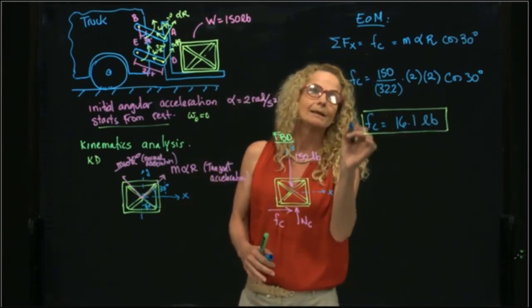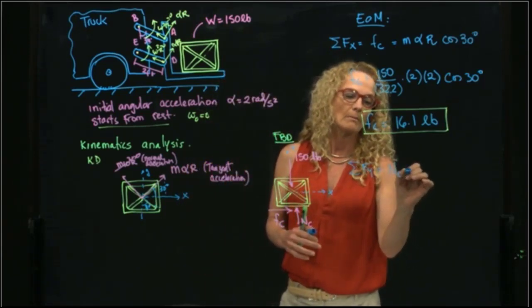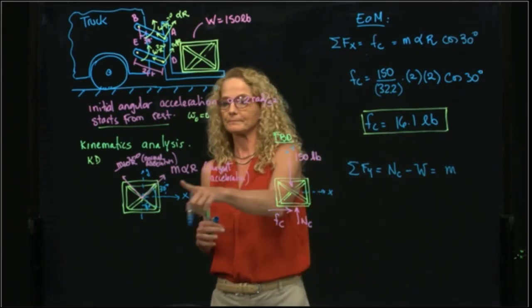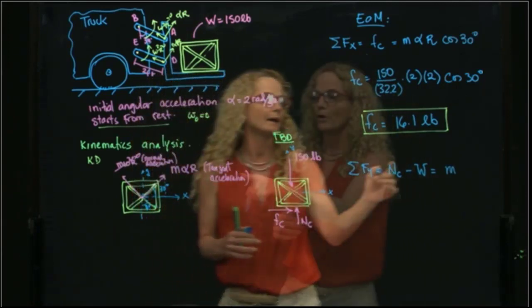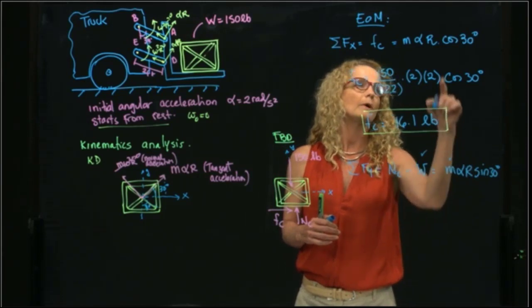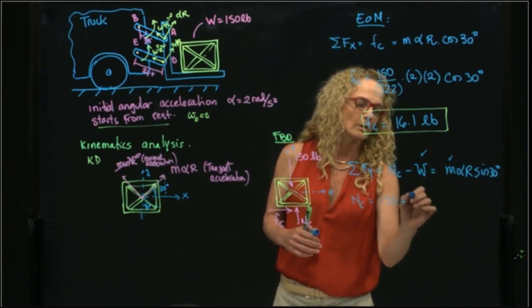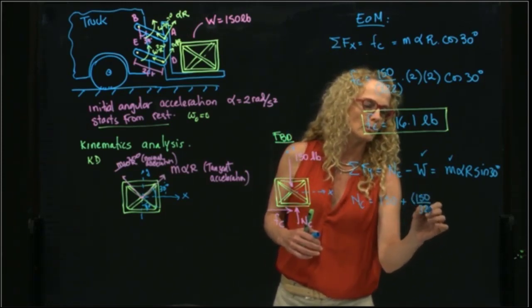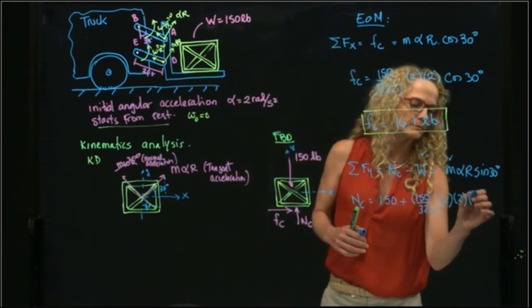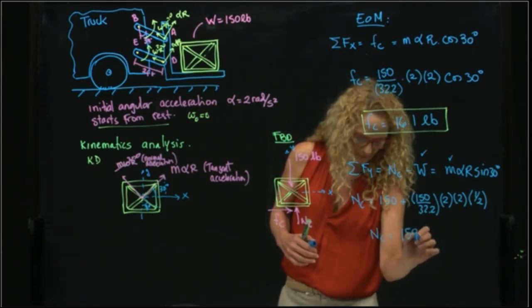When I add forces in y, I will have the normal force minus the weight, equals to mass times the tangent acceleration times sine alpha r sine of 30. This is known, this is known again, let me write it down the end. That will be 150 plus 150 divided by 32.2, 2, 2, and sine of 30, which is one half. And then I have Nc is equal to 159 pounds.